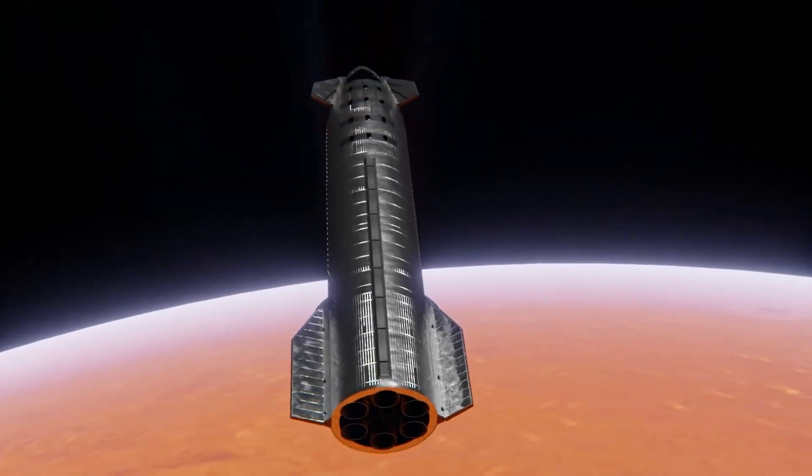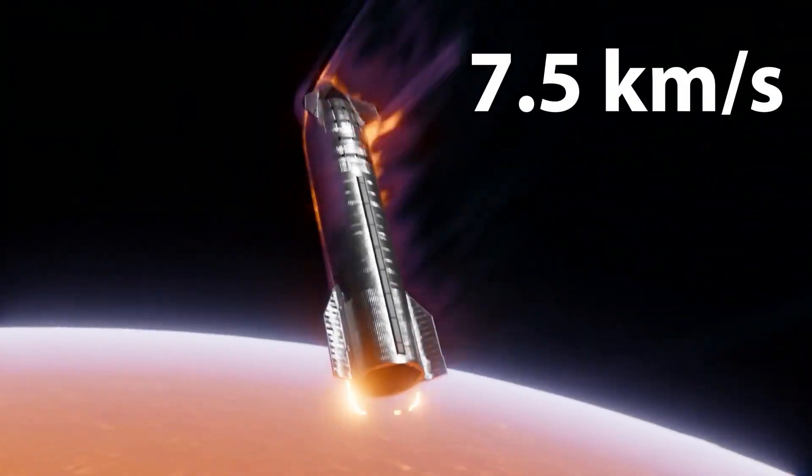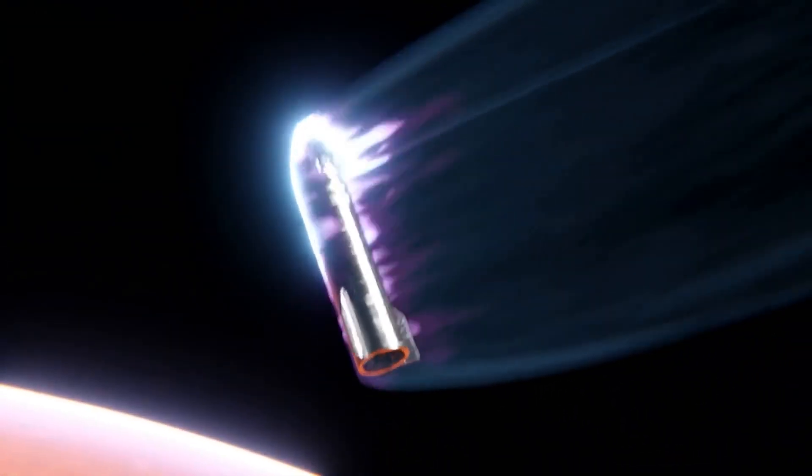SpaceX's Starship is designed to survive Mars entry at 7.5 km per second. Should a desired transit length lead to an approach velocity larger than this, there are two options.